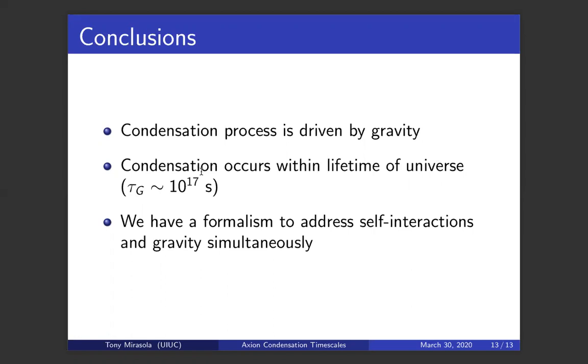Finally, we have a formalism that can address both self-interactions and gravity simultaneously. Previously, when people have studied this, they've often calculated these timescales in different formalisms separately and they've said gravity is much faster, so we're justified in just ignoring self-interactions. But even if we were to imagine a scenario where the self-interactions were much stronger than they actually are physically, we could still use this formalism of studying the Wigner distribution to compare the two timescales in a more rigorous way. Thank you.